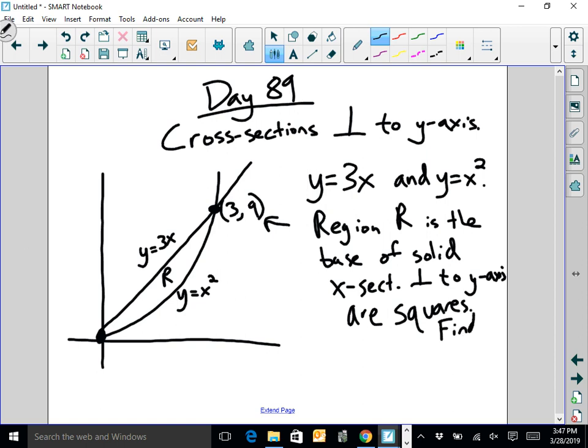Just like cross sections perpendicular to the x, they could give you a variety of shapes. The ones that are most common are squares, rectangles, right triangles with a leg in the plane, and semicircles. I'm just going to do an easy example with squares here and let the day 88 video explain for some of the other shapes.